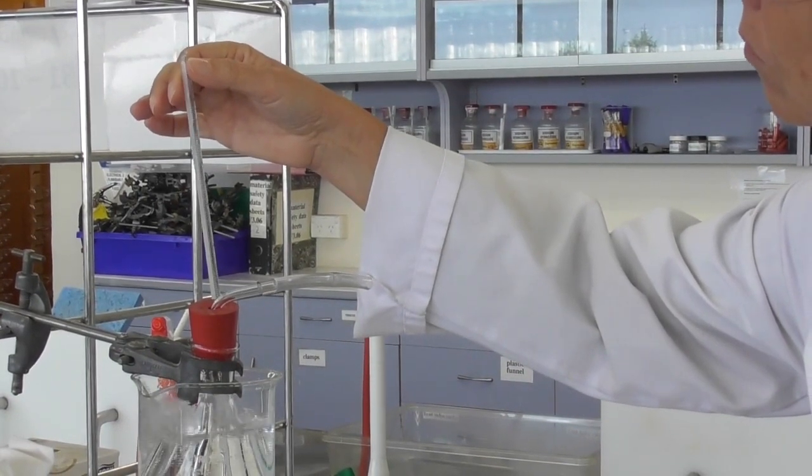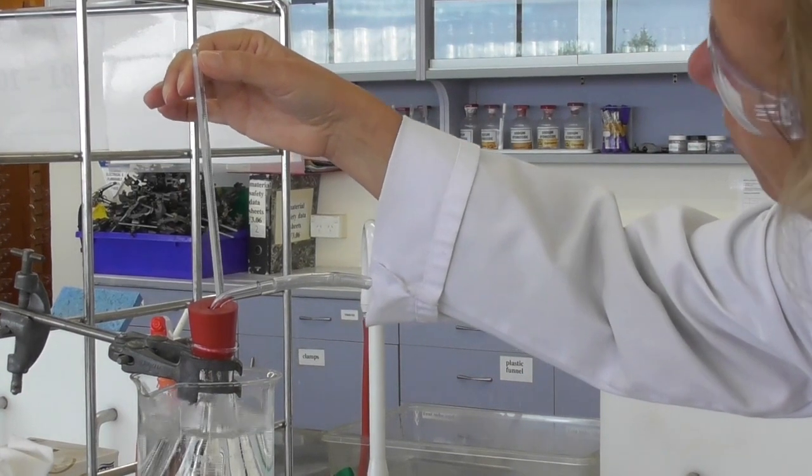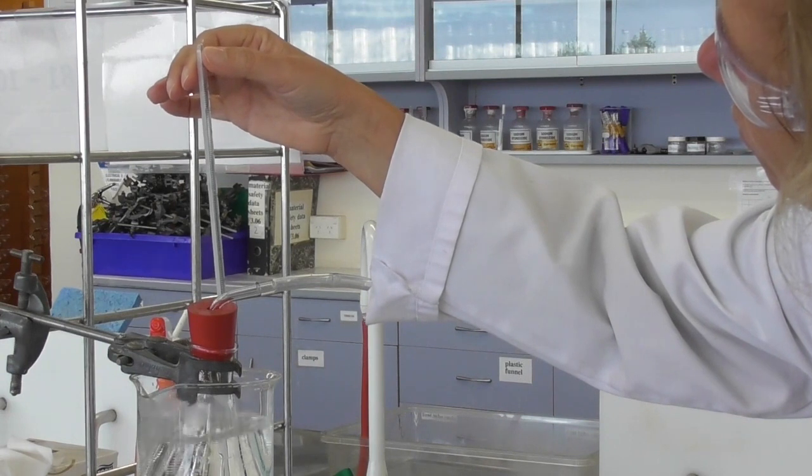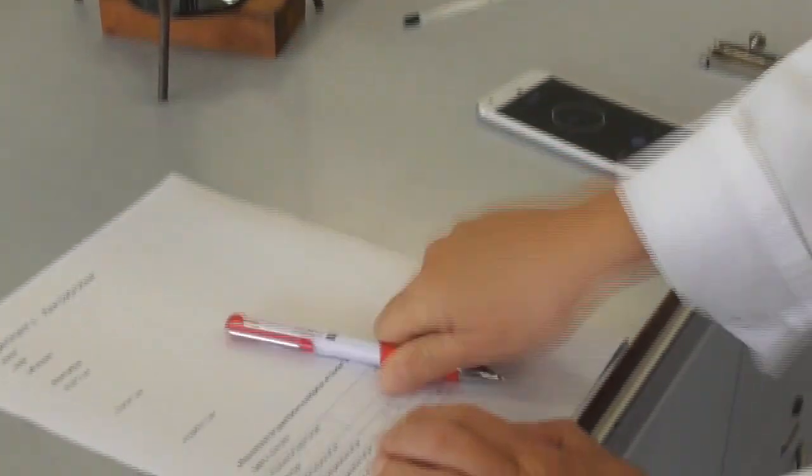While boiling water is usually around 100 degrees Celsius we have to make sure that we take the exact temperature, which is usually a little bit above or below 100 degrees, and we write this temperature down on our sheet.